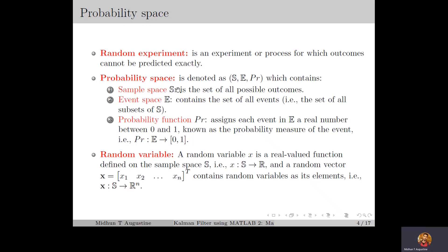The sample space S is the set of all possible outcomes of the random experiment or process. The event space E contains the set of all events, which are the set of all subsets of the sample space S. And finally, the probability function PR assigns each event in E a real number between 0 and 1, which we call the probability measure of the event, and it denotes the chance of occurrence of that particular event.